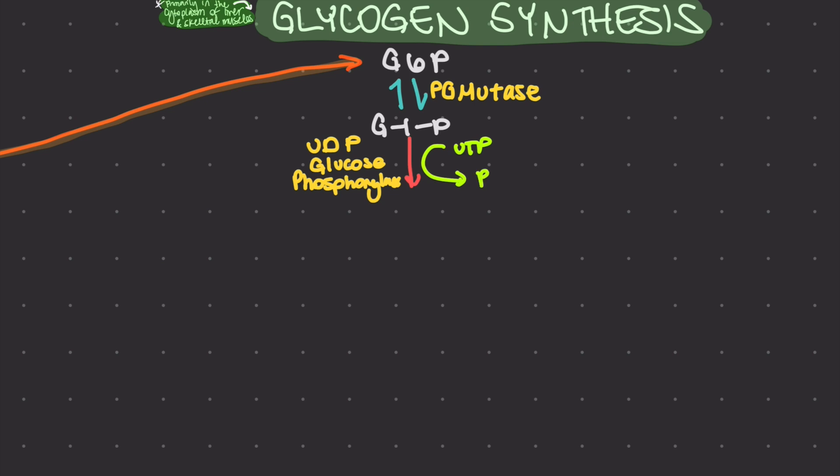Next, the pyrophosphate produced in the reaction is then hydrolyzed into two inorganic phosphate molecules, usually abbreviated by PI, by the enzyme pyrophosphatase. This is an exergonic reaction, meaning it can release energy. The hydrolysis of the pyrophosphate is a thermodynamically favorable reaction, which means it releases energy to help drive the overall reaction forward despite the initial step being endergonic.